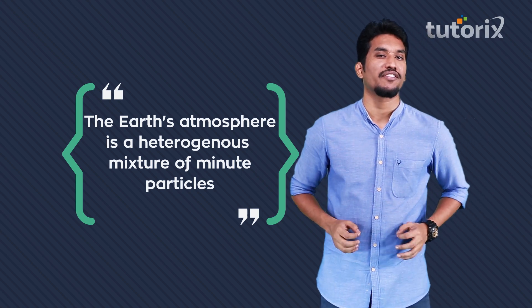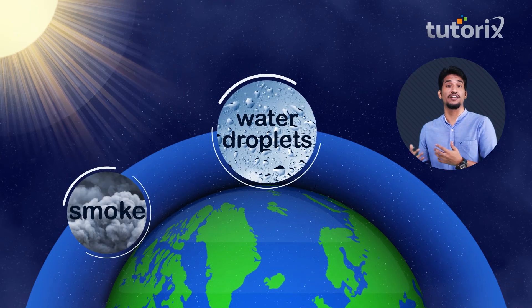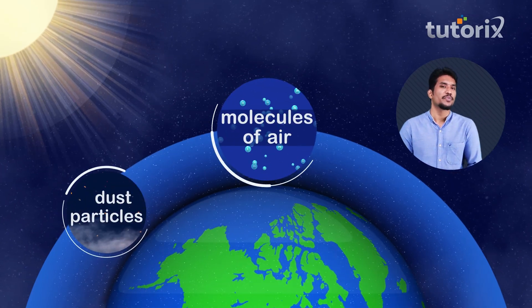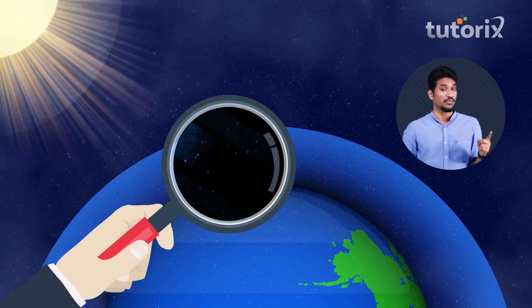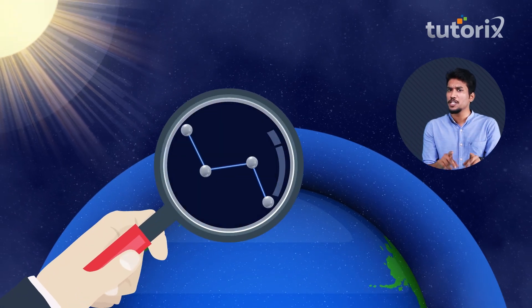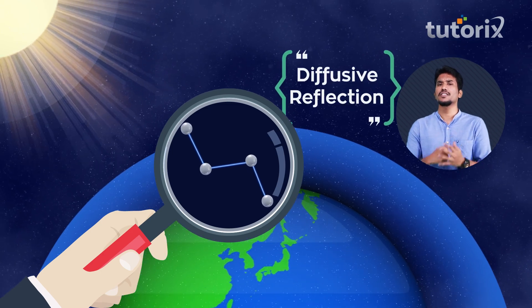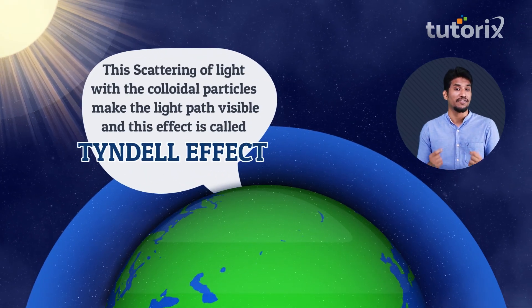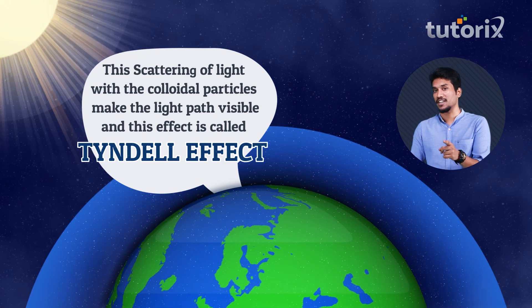Allow me to enlighten. The Earth's atmosphere is a heterogeneous mixture of minute particles. These minute particles may include smoke, tiny water droplets, suspended dust particles, and other molecules of air. When such particles are present in the atmosphere, a beam of light coming from the sun interacts with these particles, reflects diffusively, and then reaches us, giving us the visibility of the path of the beam of light. This phenomenon of scattering of light with colloidal particles is known as the Tyndall effect.